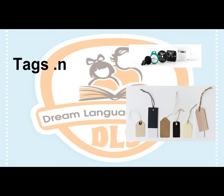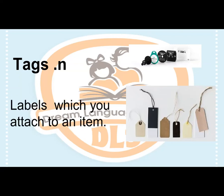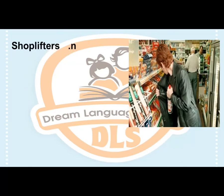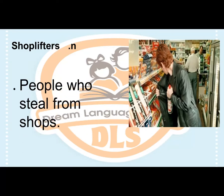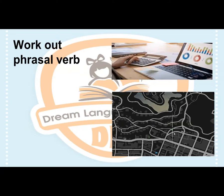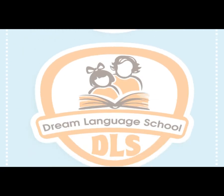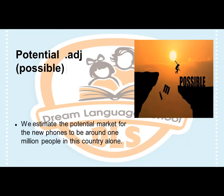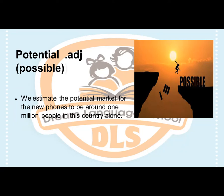Tags. Noun. Labels which you attach to an item. Shoplifters. Noun. People who steal from shops. Work out. Verb. To calculate. Potential. Adjective. It means possible. Example: We estimate the potential market for the new phones to be around 1 million people in this country alone.